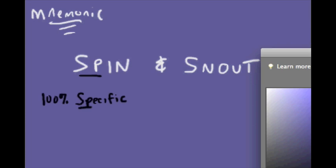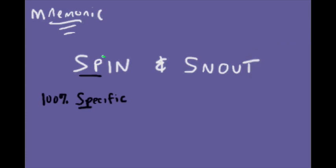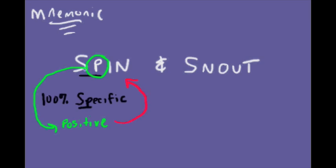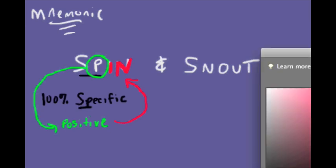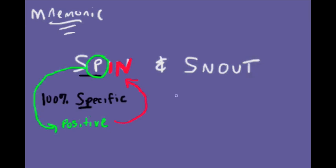Notice that both words start with the letters SP. A positive result means we can rule in the disease, and you can remember this by using the letter P from the word SpIN — which is the part of the mnemonic most often forgotten. Tests that are specific rule in diseases, but they may lack sensitivity, and thus we may not diagnose everyone. That is called a false negative.